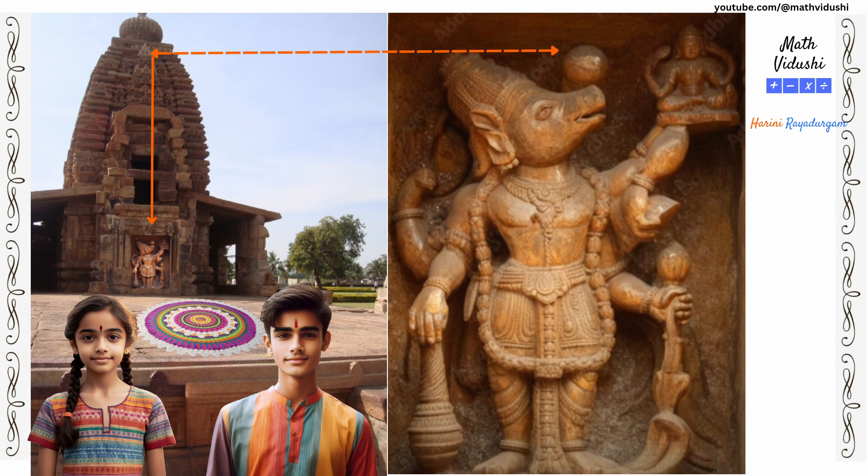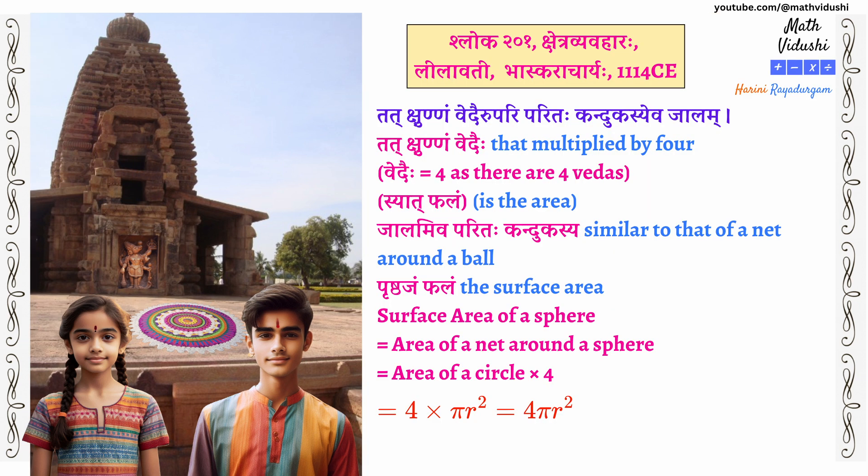Now imagine a ball — like this ball representing Bhoomi Devi on Varahaswami's snout. The second line of Bhaskaracharya's sloka says: Kshunnam vedaihi upari paritaha kandukasyeva jalam. That multiplied by 4 — 4 is represented by the name vedaihi as there are 4 Vedas. Syaath falam is the area. Jalamiva paritaha kandukasyeva — similar to that of a net around a ball. Prishtajam falam — the surface area. Surface area of a sphere equals the area of a net around a sphere, that is 4 × area of a circle = 4πr².